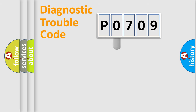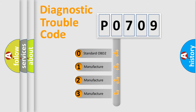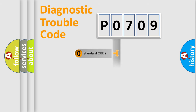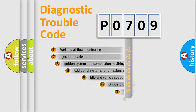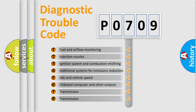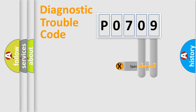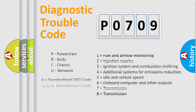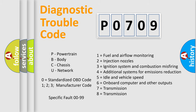This distribution is defined in the first character of the code. If the second character is expressed as zero, it is a standardized error. In the case of numbers 1, 2, or 3, it is a more specific car-specific error. The third character specifies a subset of errors. The distribution shown is valid only for the standardized DTC code. Only the last two characters define the specific fault of the group, and this division is valid only if the second character code is expressed by the number zero.